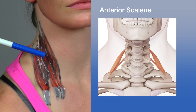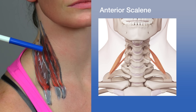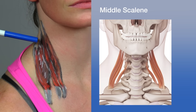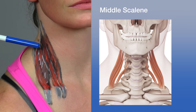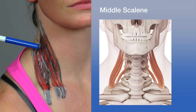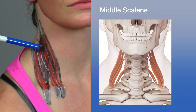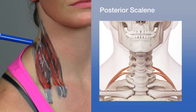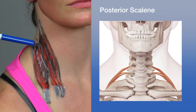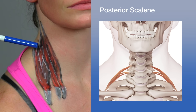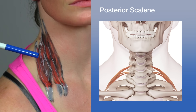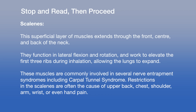The scalenes consist of three muscles. The scalenus anterior and scalenus medius originate from the transverse processes of C3–C6 and C2–C7 respectively, inserting close together on the anterior part of rib one. The scalenus posterior runs from the transverse processes of C4–C6 to the lateral surface of the second rib. The muscles are innervated by the brachial plexus.